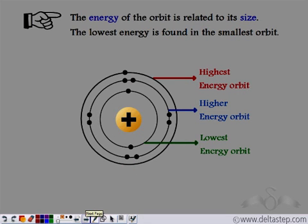He related the energy of these orbits to their size. So the orbit which is closest to the nucleus, it is smallest in size and therefore it has the lowest energy. The second orbit has a little higher energy, and the outermost orbit being the largest has the highest energy.